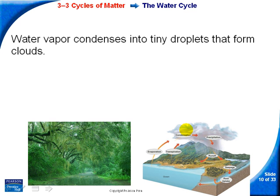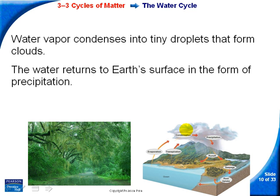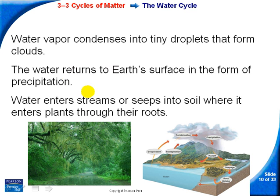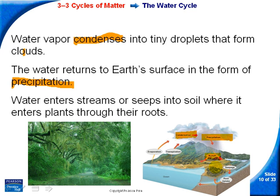Water can condense and we end up with rain. It condenses into droplets — that's condensation — and it returns to earth in the form of precipitation, which we know as rain or snow. Water then ends up in streams and into soil. That would be runoff when it goes into streams, and seepage when it goes into the soil. It can also enter plant roots through root uptake.